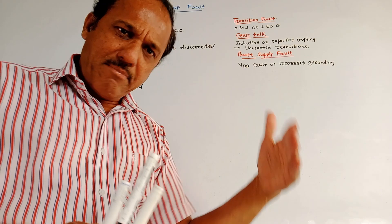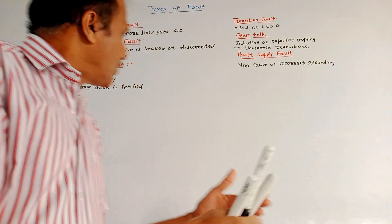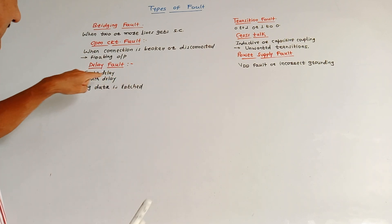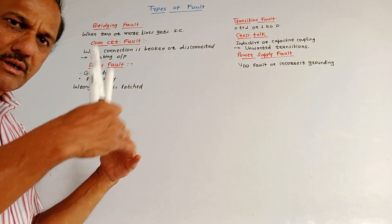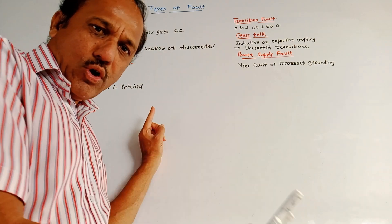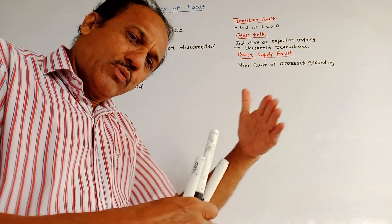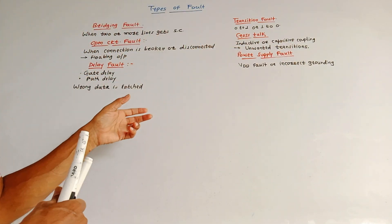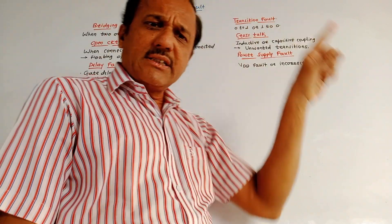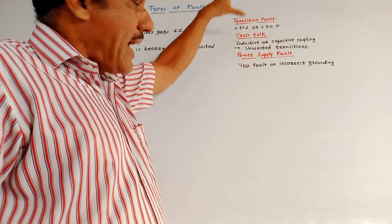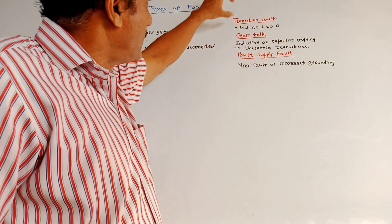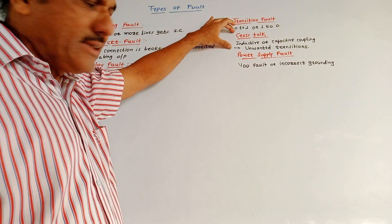Next is the delay fault. Delay is the time required by the signal to reach the output. There are two types: gate delay, which is the delay when signals propagate through logic gates, and path delay, which depends on the path followed by the signal to reach the output. Due to this delay, wrong data may be latched in the circuit. Next is the transition fault, which is related to the transition from 0 to 1 or 1 to 0. This transition should be completed within the specified time period; if not, it creates errors at the output.